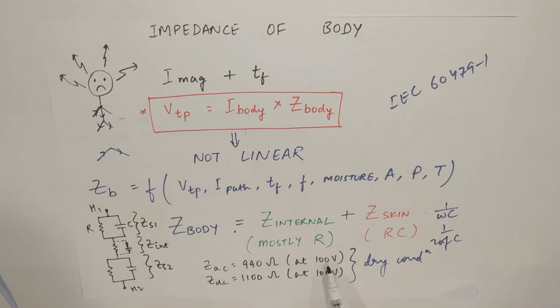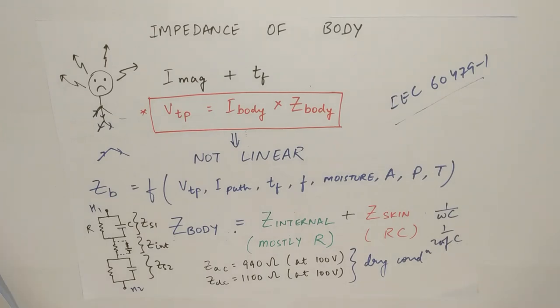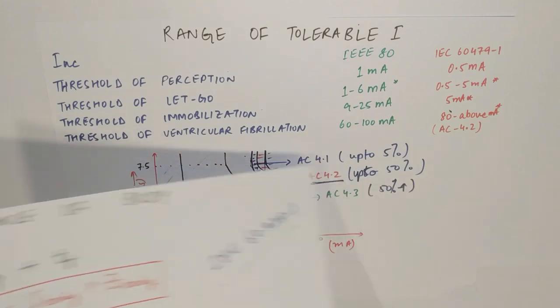Now, I have given an example of 100 volts here. Above 200, both are similar because no effect of skin. At 100 volts, impedance offered by AC is 990. Whereas, in case of DC, it is 1100 ohms. This is in case of dry condition. It depends upon moisture and all. So, I have not taken that example. To refer to other values, you can go back to this IEC 60479-1 and check. Now, we understood the impedance, the nature of impedance, how it works. Now, we understand what is the amount of current that can impact.